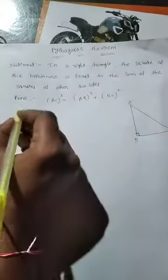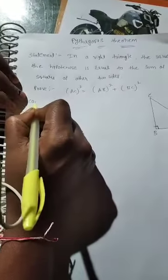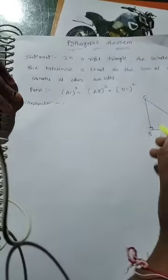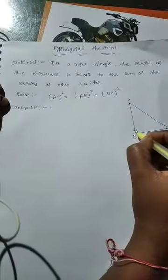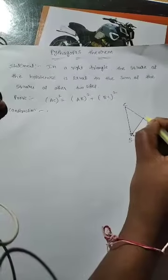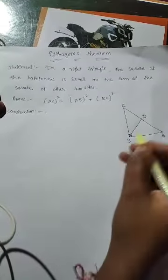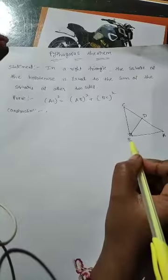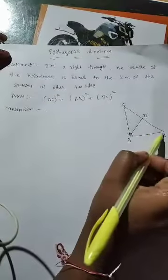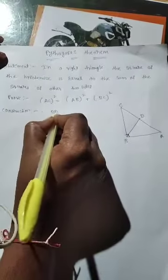For the construction, we will draw one straight line exactly from the vertex B, and we will call this point D. So you will see here a perpendicular line — this is the perpendicular line, and it exactly divides AC. So BD is a perpendicular line to AC.